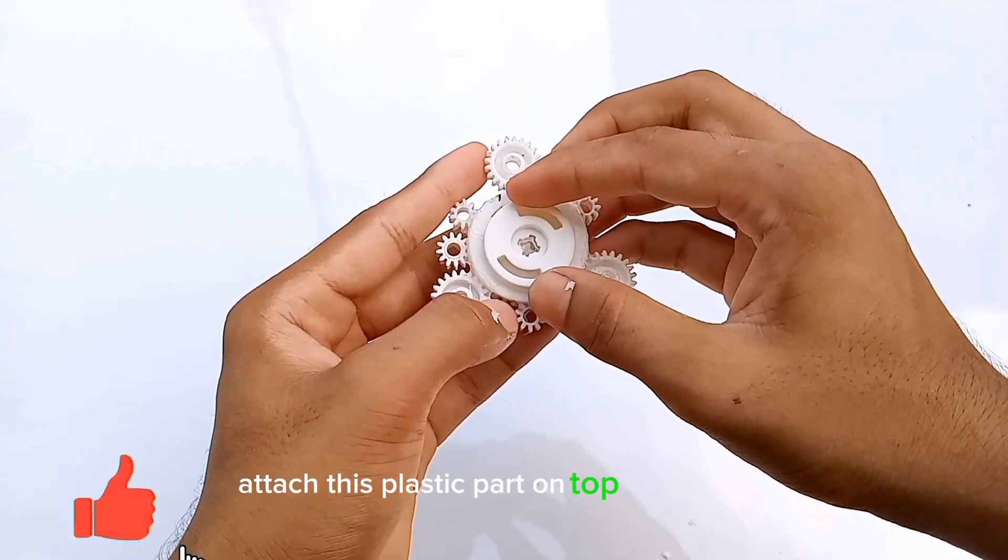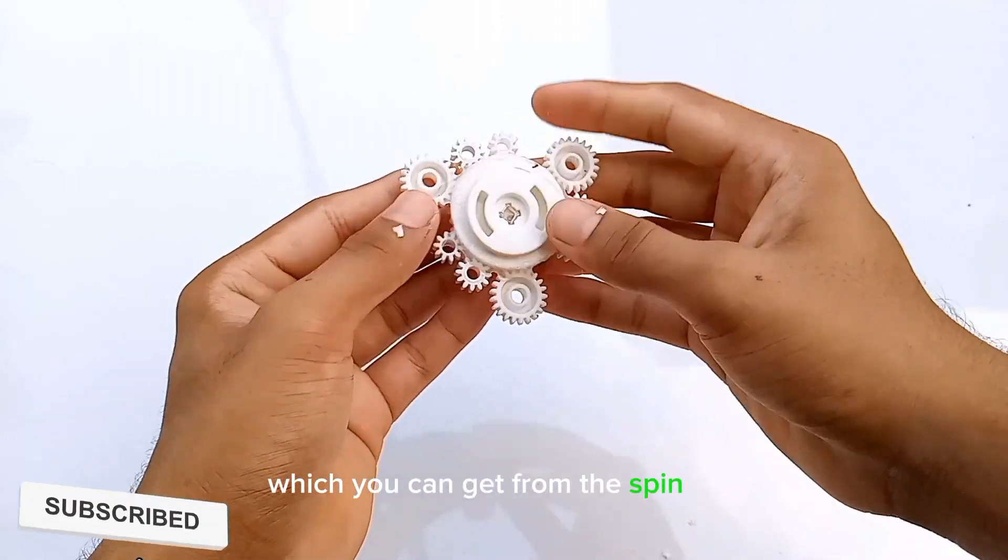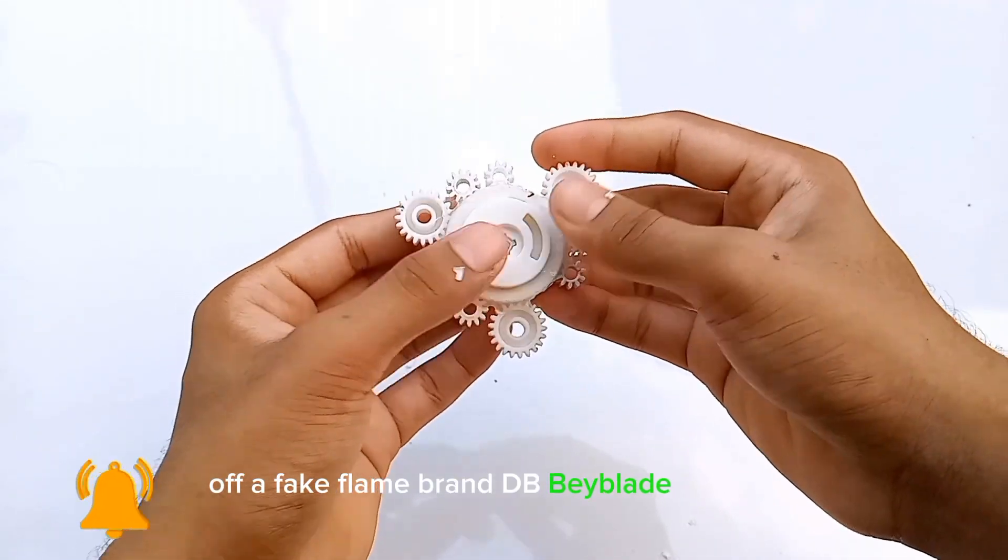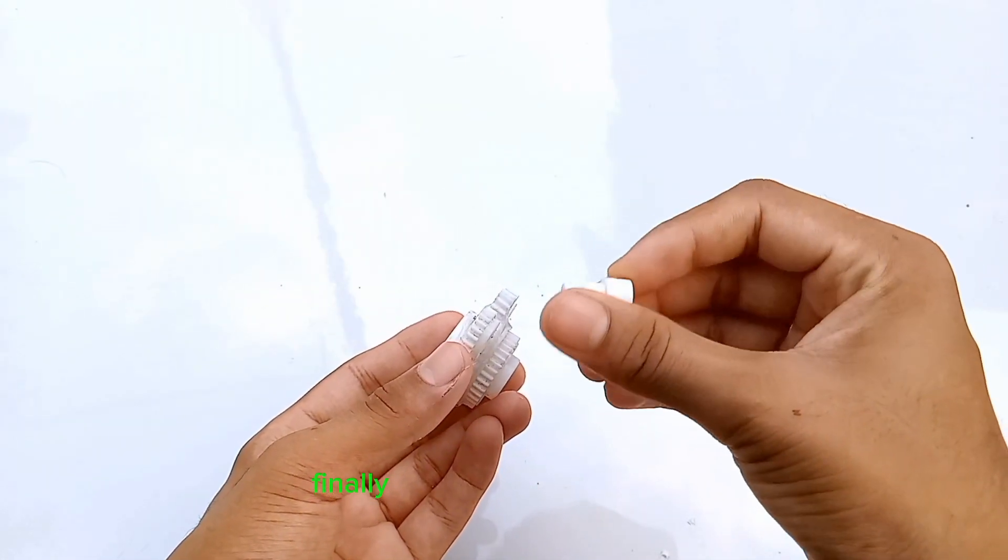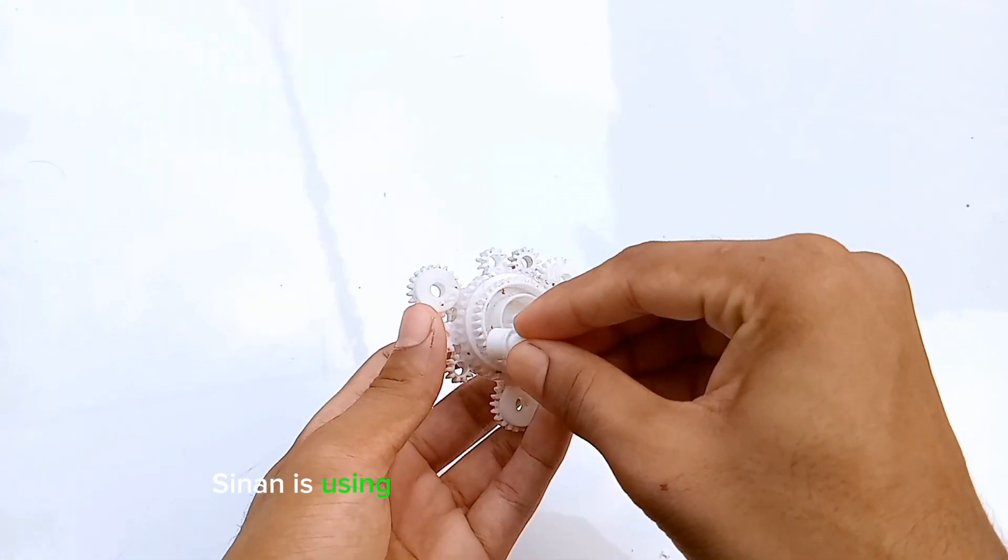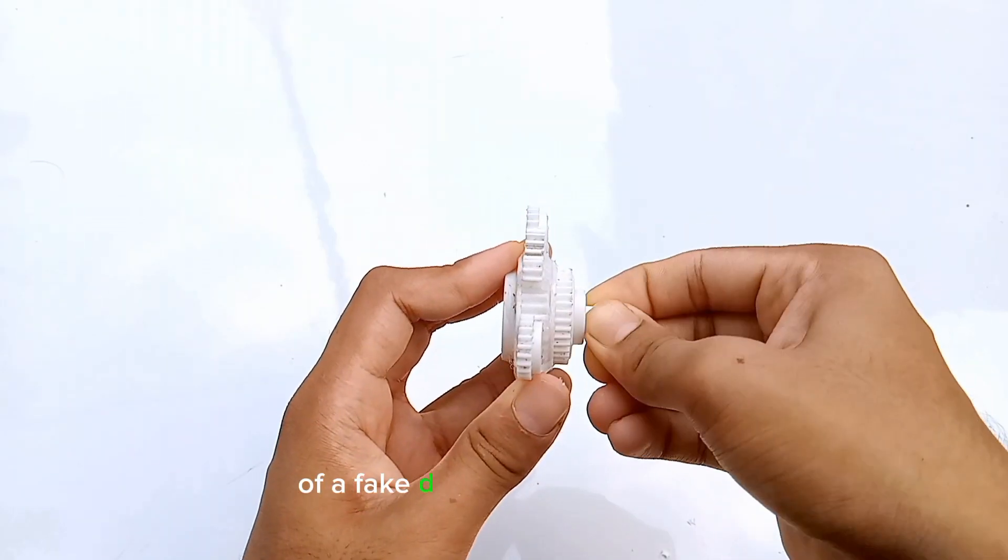Attach this plastic part on top of the layer, which you can get from the spin unit of a fake Flame Brand DB Beyblade launcher. Finally, for the performance tip, Sinan is using another part from the spin unit of a fake DB Beyblade launcher.